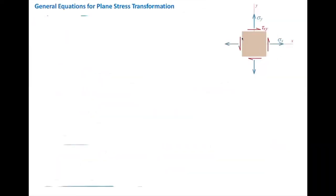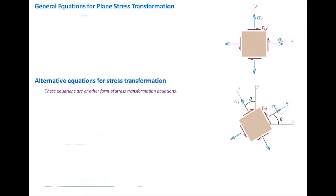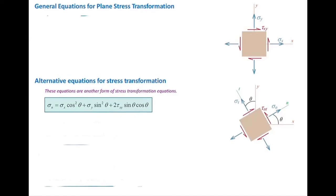Consider a general state of stress in a two-dimensional problem. There are three independent stresses: sigma_x, sigma_y, and shear stress tau_xy. If the stress element is rotated by angle theta to a new orientation, the stress transformation equations give: sigma_n = sigma_x·cos²(θ) + sigma_y·sin²(θ) + 2·tau_xy·sin(θ)·cos(θ). This is the equation we proved for the case of sigma_x alone, with additional terms for sigma_y and tau_xy.